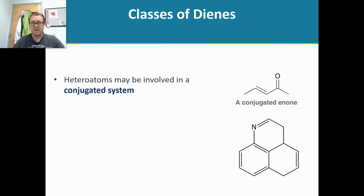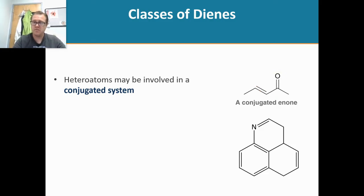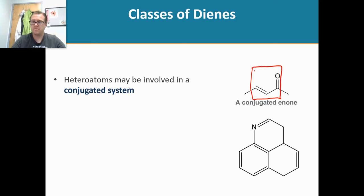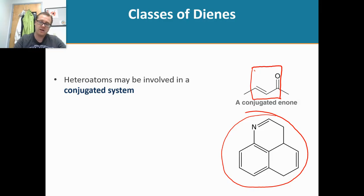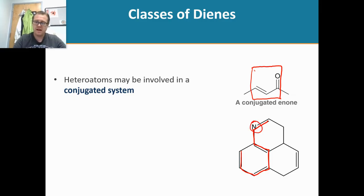Heteroatoms can also participate in a conjugated system. In this enone, you can see double-single-double, where oxygen is our heteroatom and forms part of the conjugated system. In this cyclic amine, you can see a double-single-double-single-double pattern, so the nitrogen heteroatom is also part of a conjugated system.